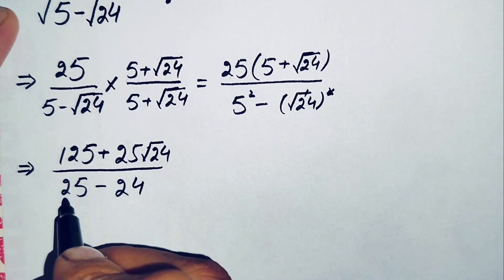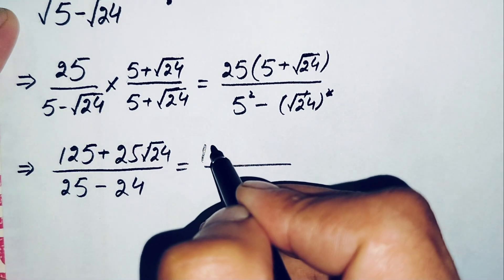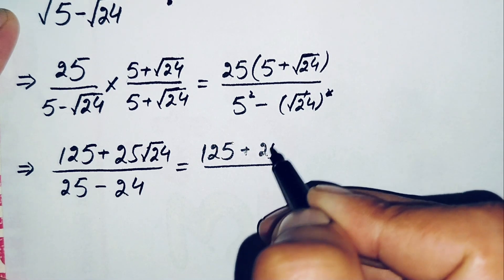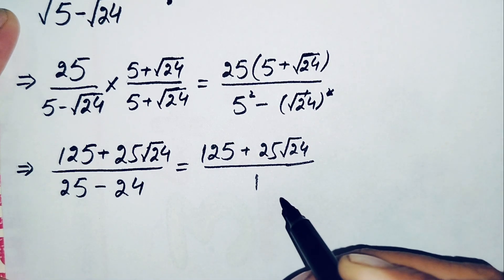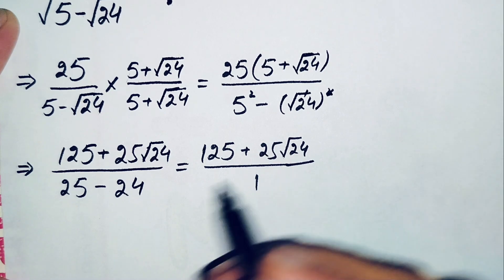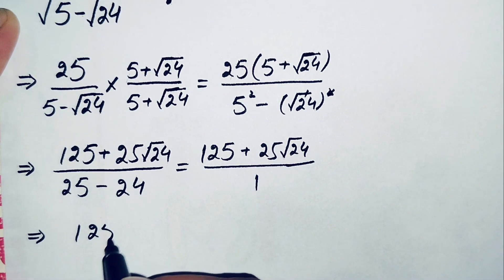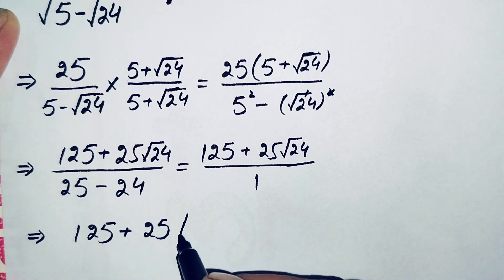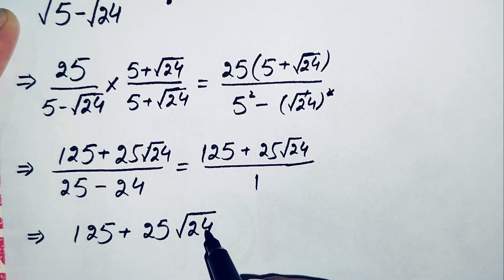Since 25 minus 24 equals 1, the denominator becomes 1. The numerator is 125 plus 25 times square root of 24, and since any number divided by 1 is itself, the expression simplifies to 125 plus 25 times square root of 24.